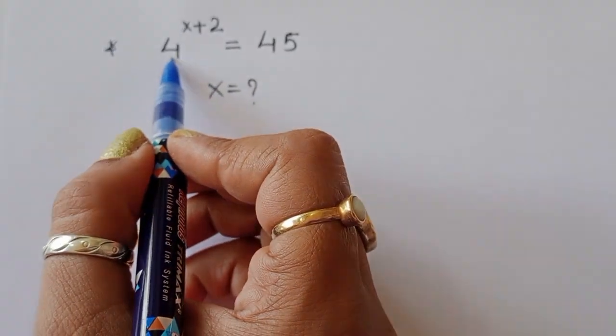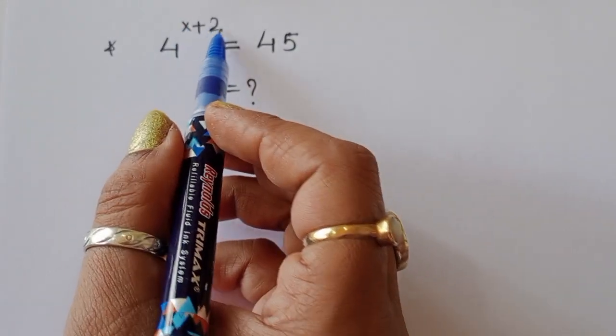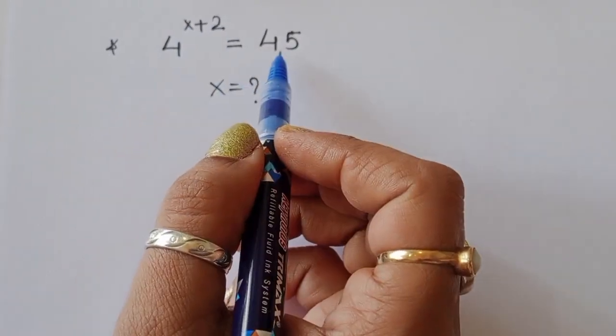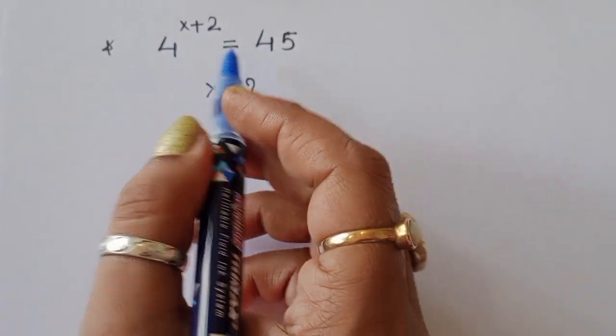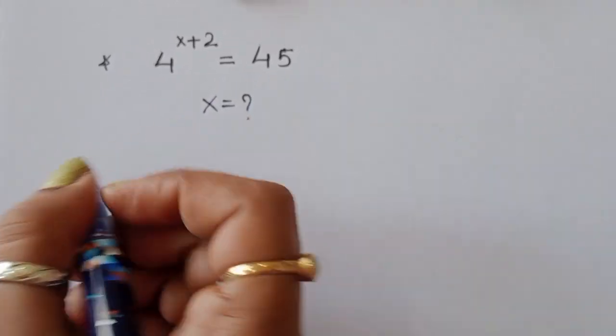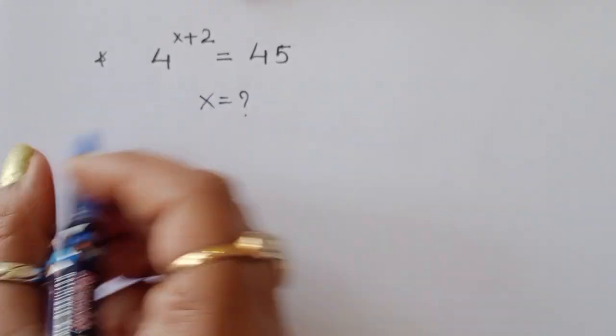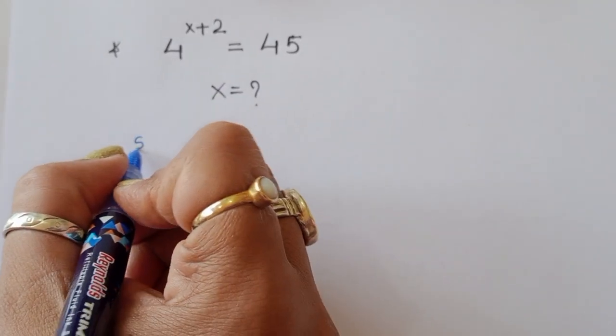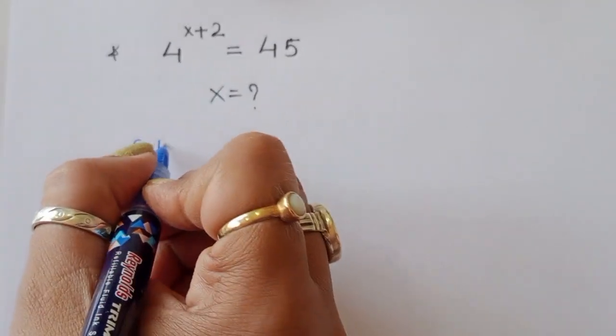The question is given: 4 power x plus 2 is equal to 45. We have to find out the value of x. Let's see the solution.